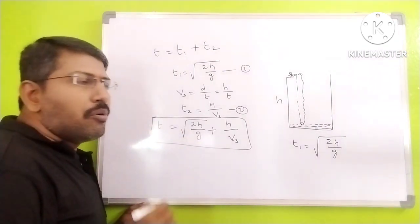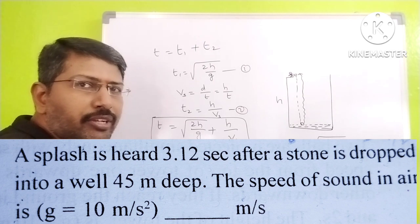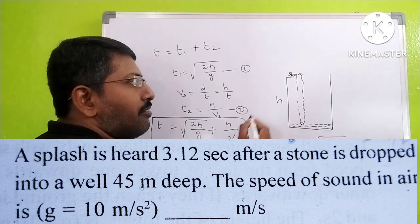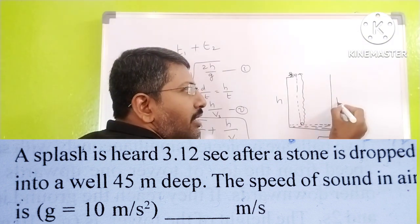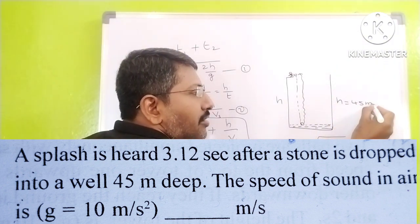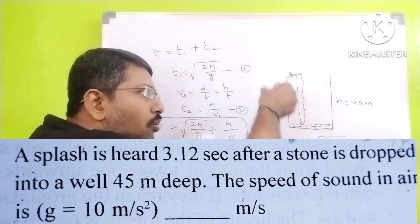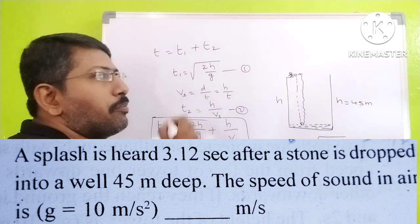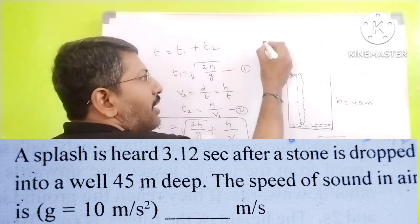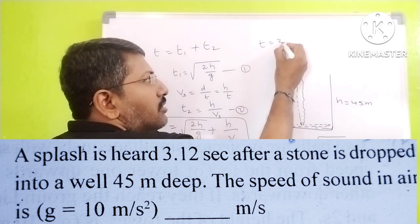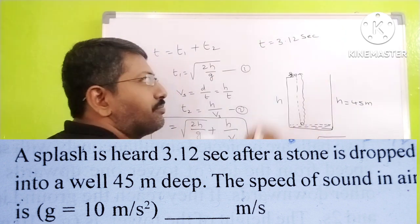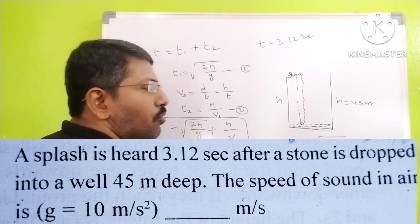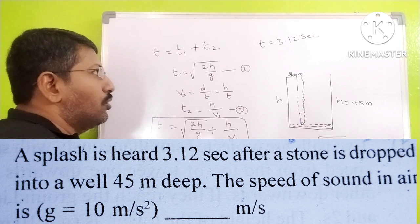Based on this concept, a previous examination question is given. The depth of the well is given as 45 meters. The total time taken by the sound to reach the observer from the point of dropping is given as T equal to 3.12 seconds. The question asks: what is the speed of sound?